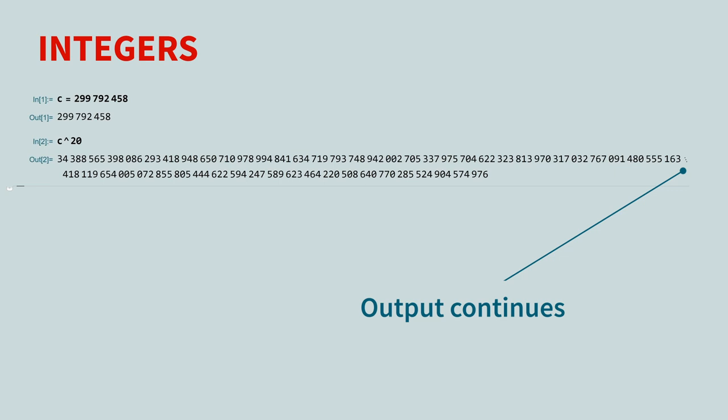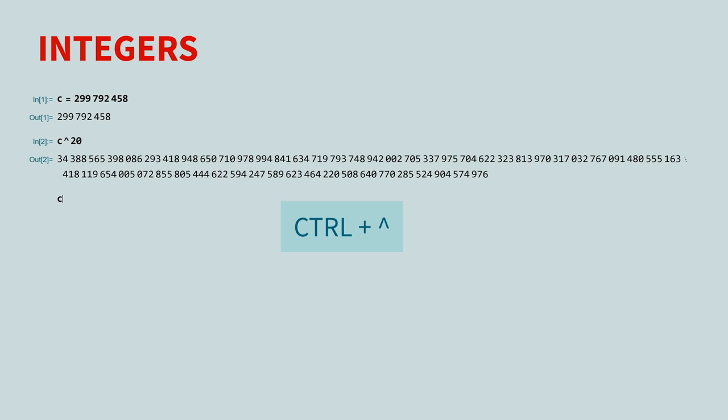Another way to type an exponent is by pressing Ctrl caret. When you are done typing the exponent, press the right arrow and execute the command.